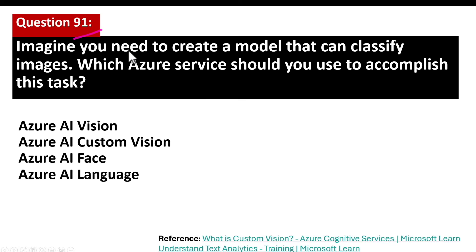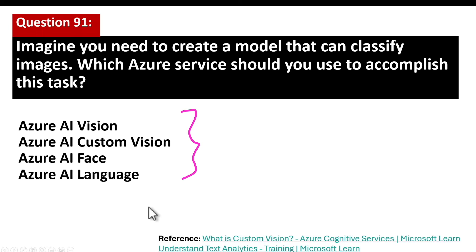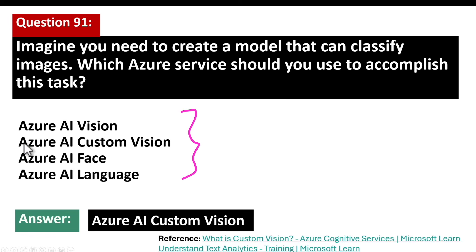Question number 91. Imagine you need to create a model that can classify images. Which Azure service should you use to accomplish this task? Let's go through the available four options. The correct answer is Azure AI Custom Vision.